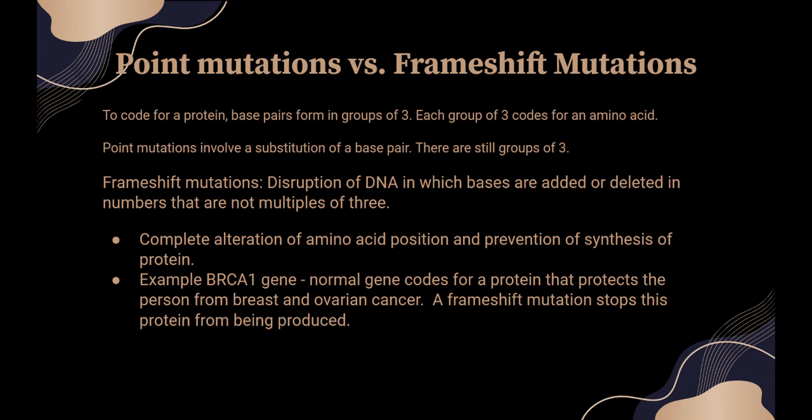An example of a frameshift mutation could be the BRCA1 gene. The normal gene codes for a protein that protects the person from breast and ovarian cancer — it's like a defense mechanism. But if you have a frameshift mutation and you add or delete from that sequence, the protein will not be produced and the person will be vulnerable to breast and ovarian cancer.